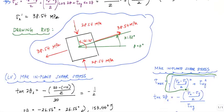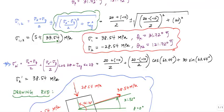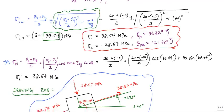And that's because this is also the radius in Mohr's circle. This value is just 33.54 megapascals.